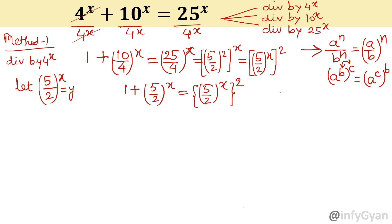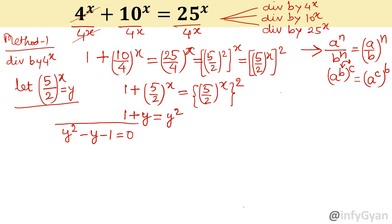Now substitute (5 over 2) whole power x equal to y. So the equation will be 1 plus y equal to y square. In other words, y square minus y minus 1 equal to 0. So formation of quadratic equation: a is 1, b is negative 1, c is negative 1.